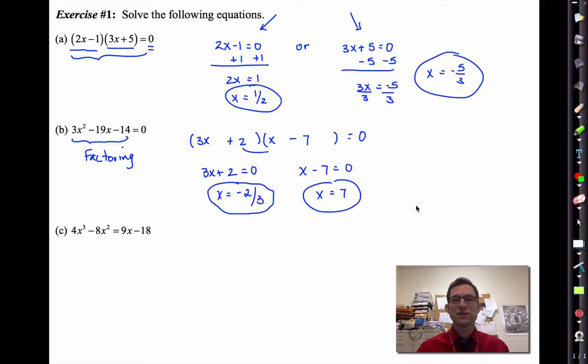In letter C we've got the full picture: an equation that's not set equal to zero nor is it factored. So the first thing I'm going to do is get it equal to zero by subtracting 9x and adding 18 to both sides. That's going to give me 4x cubed minus 8x squared minus 9x plus 18 is equal to zero. Now we have to look to factor this using factoring by grouping.